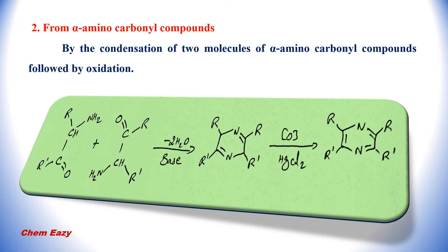In another method, we can synthesize pyrazine from an alpha-amino carbonyl compound. In this method, two molecules of this alpha-amino carbonyl compound undergo condensation and produce the intermediate dihydro-derivative of pyrazine. This dihydro-derivative on oxidation produces the pyrazine derivative.